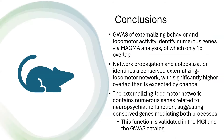This is very preliminary work, still ongoing with a lot of follow-up to do. On the whole, we found that externalizing behavior and locomotor activity does identify shared genetic signal, which is fantastic. It has answered a 30-year-old question about whether this phenotype is actually reflecting human behavior. Network propagation identified a conserved network that is much more overlapping than expected, and the resulting network contains numerous genes related to neuropsychiatric function, validated in the MGI.